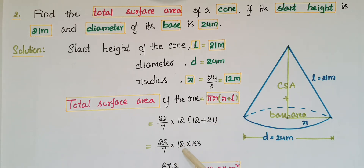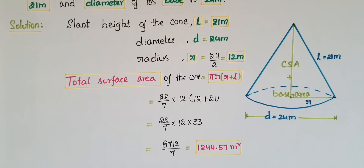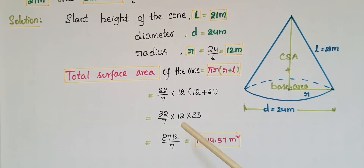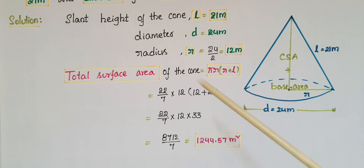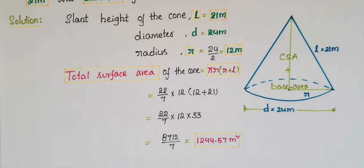So that equals 22/7 × 12 × 33, which gives 8712/7, equal to 1244.57 meter square. This is the total surface area of the cone. Total surface area means curved surface area plus the base area of the cone.